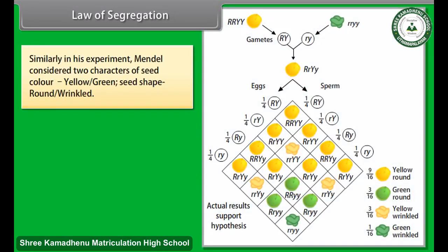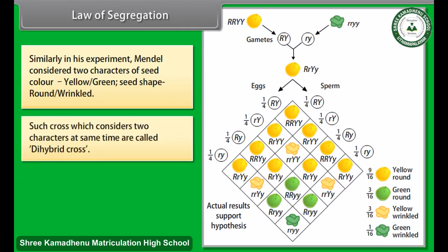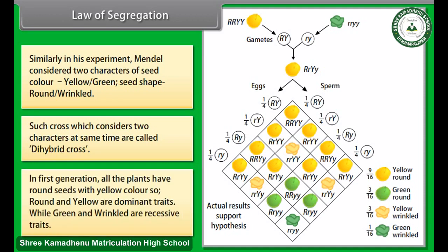Similarly, in his experiment, Mendel considered two characters: seed color (yellow/green) and seed shape (round/wrinkled). Such a cross which considers two characters at the same time is called a dihybrid cross. In the first generation, all the plants had round seeds with yellow color. So round and yellow are dominant traits, while green and wrinkled are recessive traits.